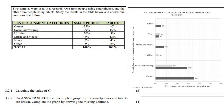With this question, I tried to fit everything in as best as possible. It says here: two samples were used in a research — one from people using smartphones and the other from people using tablets. Study the results in the table below and answer the questions that follow.